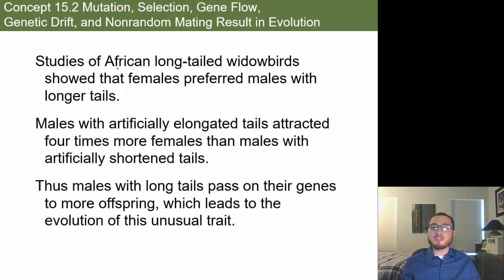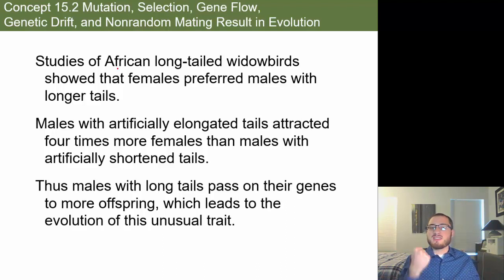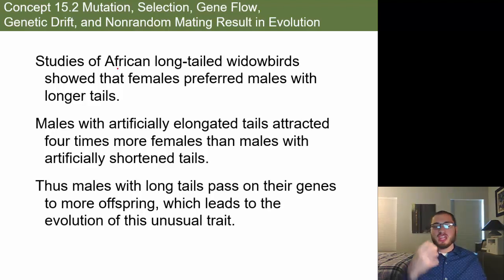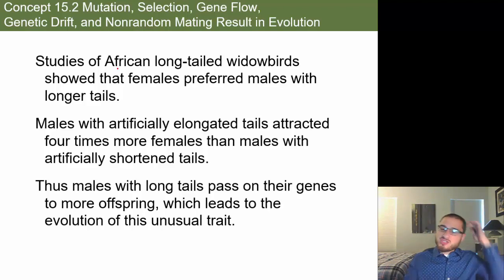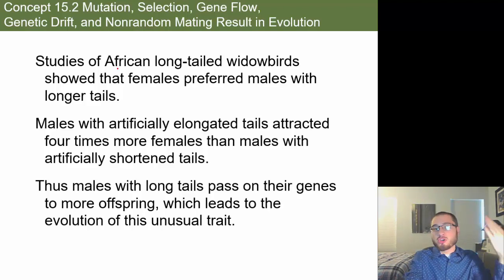Sexual selection is another mechanism — individuals of one sex have preferences for mates not necessarily based on survival ability, but that still influence which traits get passed on. The African long-tailed widow bird is a good example: males have long tails that don't help survival and may even make them more visible to predators. But females select males with the longest tails, and over many generations, the tails have gotten longer and longer.